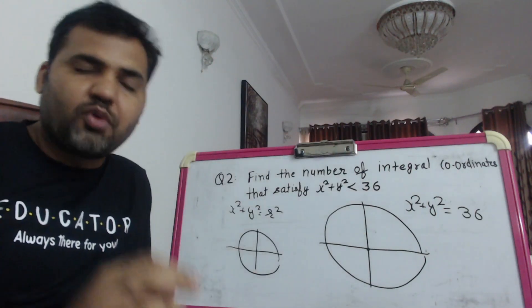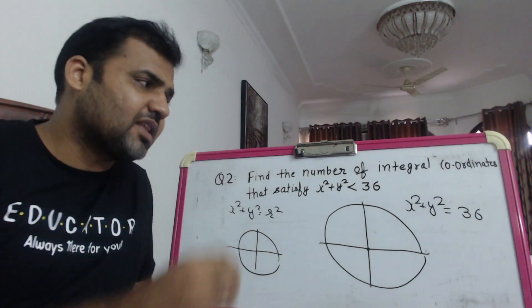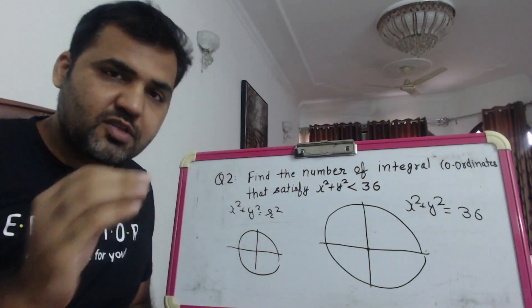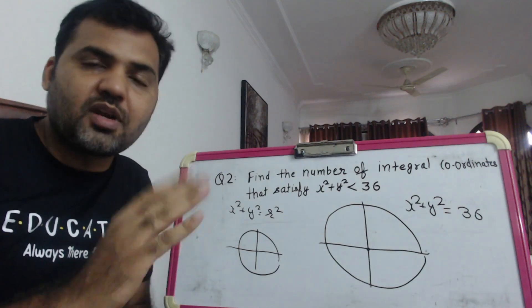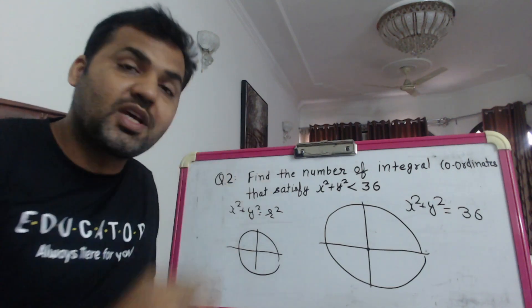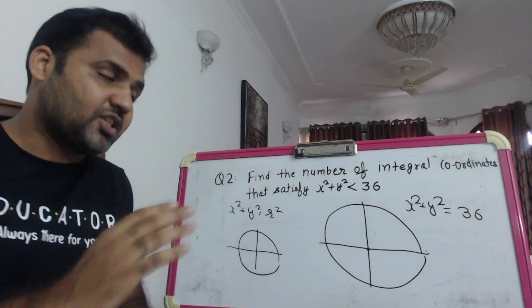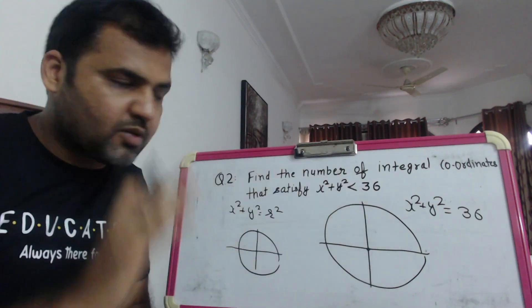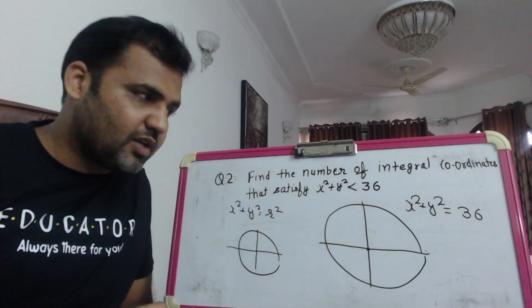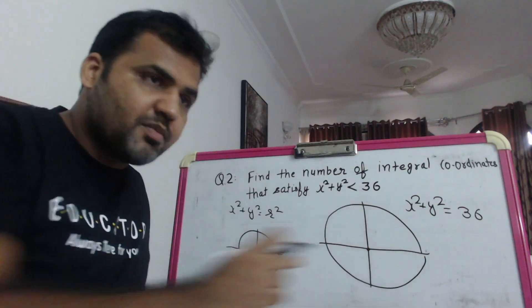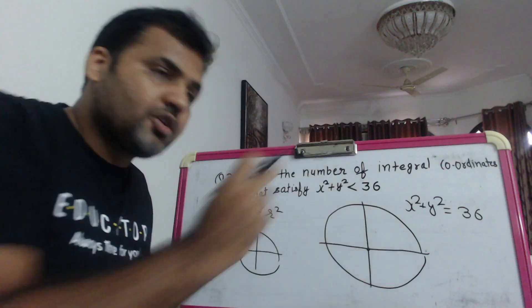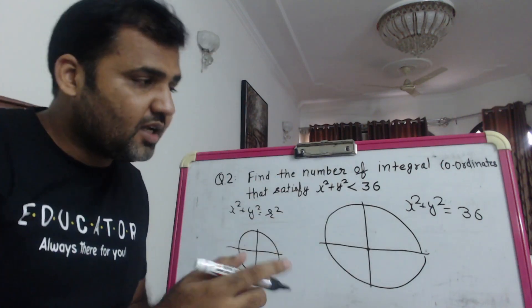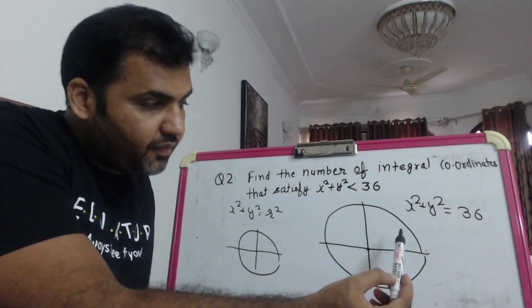You can solve this question very easily quadrant-wise, rather than using a trial method putting values randomly where you'll miss many points. The right approach is to pick any one quadrant, because it's a symmetric figure. However many integral solutions are in the first quadrant, the same will be in the second, third, and fourth quadrants. So I just need to find how many (x, y) values exist in the first quadrant.